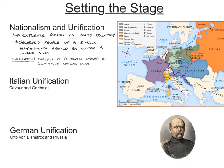For Italian unification, the key figures were Cavour and Garibaldi. Cavour was the leader of the strongest Italian city-states of Piedmont and Sardinia, and he pushed for unification through diplomacy. Garibaldi was the leader of the southern states in Italy. The problem was that northern Italy was under control of the Austrian Empire. They eventually went to war and defeated the Austrian Empire in 1860, resulting in Italian unification.